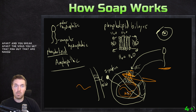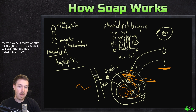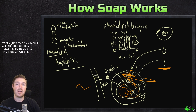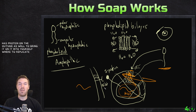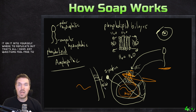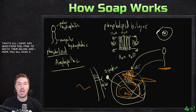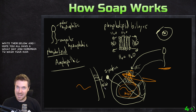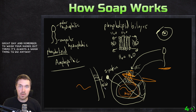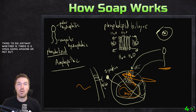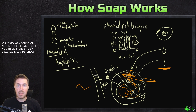And that's the key here — we disrupt that membrane, we pull it apart, and you break apart the virus. You get that RNA out, and just the RNA won't infect you. The virus needs to have that S protein on the outside as well to bring that RNA into your cell for it to replicate. But that's all I have for today. If you have any questions, feel free to write them below. I hope you all have a great day, and remember to wash your hands out there. It's always a good thing to do anyway, whether there is a virus going around or not. Stay safe, and bye bye.